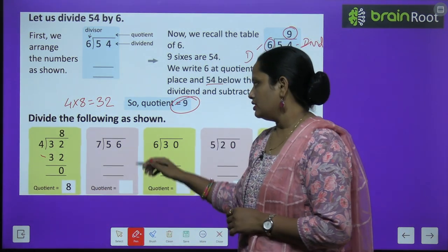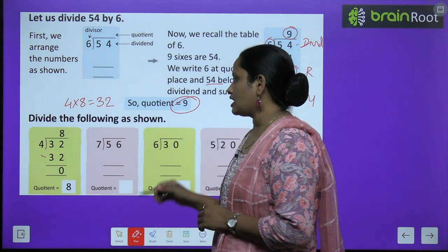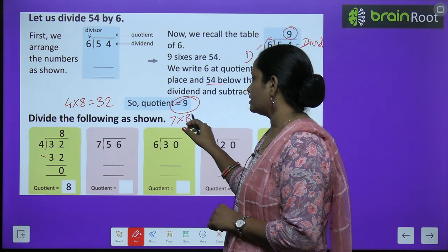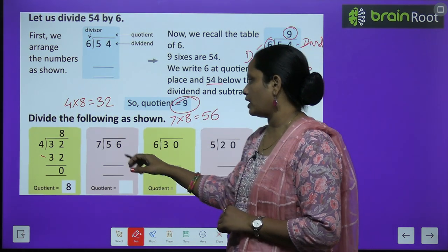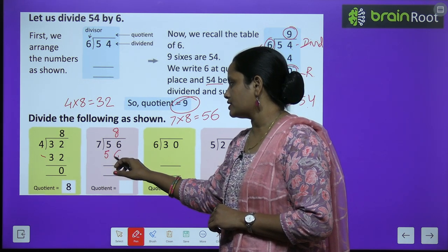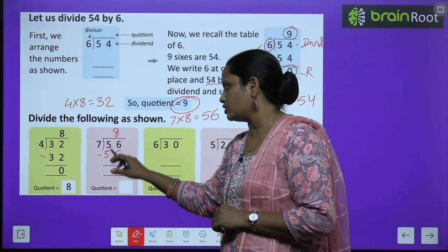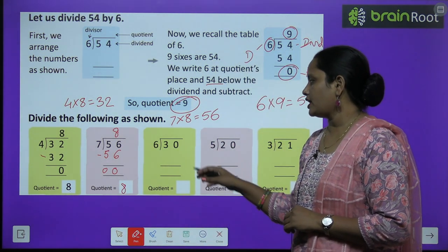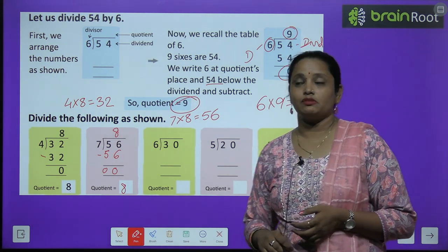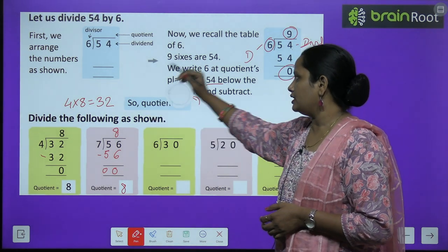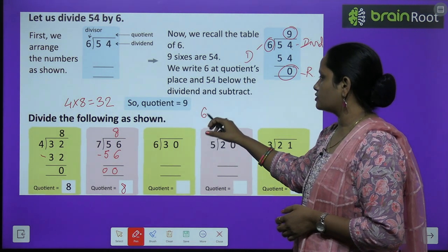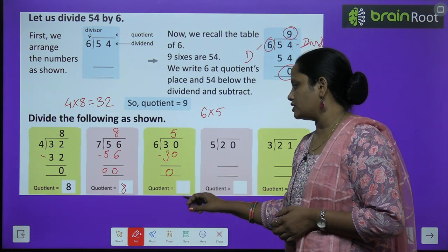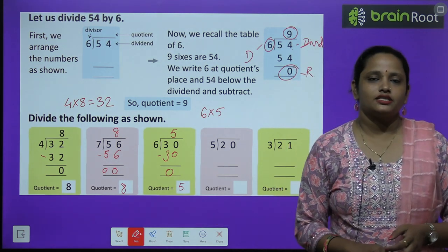So we wrote 4 here, 8 above, then wrote 32 below and subtracted. The quotient here is 8. Next, another number: we need to divide 56 by 7. So we read the table of 7 and found that 7 eights are 56. So we wrote 8 here, then 56, subtracted both — 6 minus 6 is 0, 5 minus 5 is 0 — so the quotient is 8. Next, divide 30 by 6. Read the table of 6 — 6 fives are 30. Write 5, subtract 30, remainder is 0, and the final answer is 5.